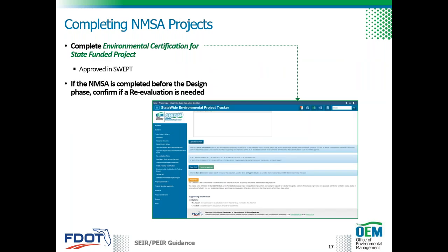Non-major state actions generally don't require a public hearing but require public involvement activities in accordance with Part 1, Chapter 11 of the PD&E manual. The district completes the non-major state action checklist and the environmental manager or designee will electronically approve it in SWEPT. After approval, they may also complete the environmental certification for state funded project form in SWEPT, which certifies that the environmental analysis has been completed and provides environmental clearance to continue the project delivery process.